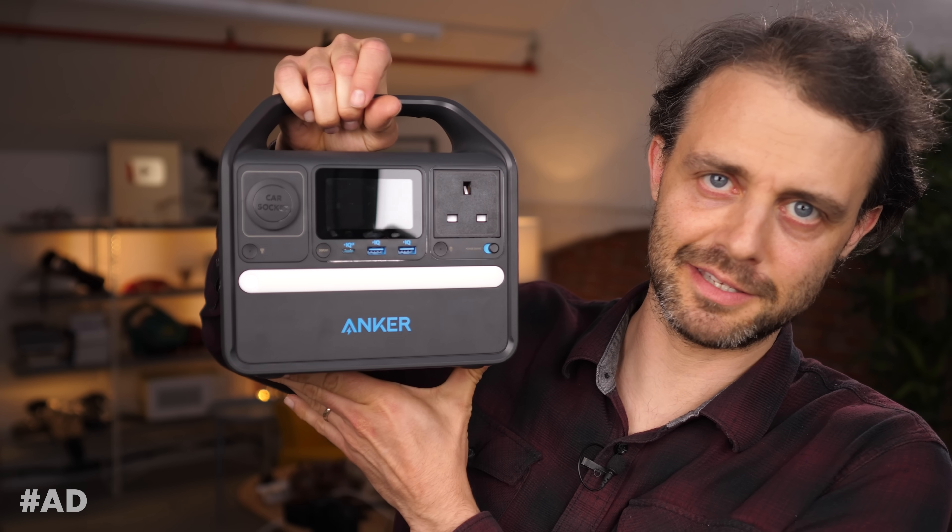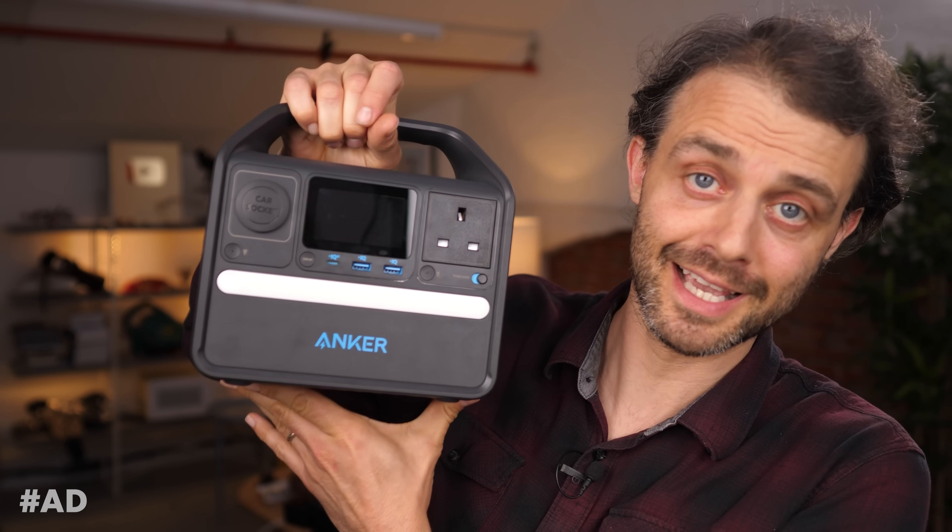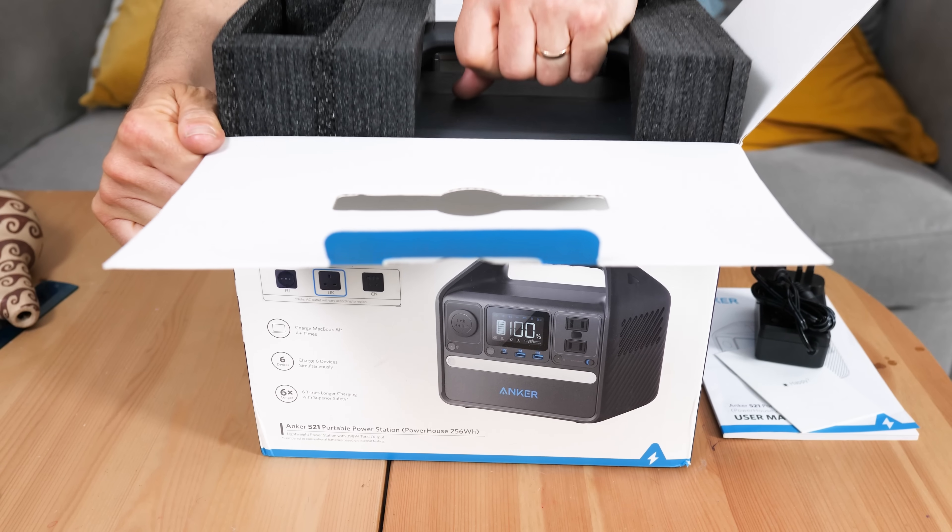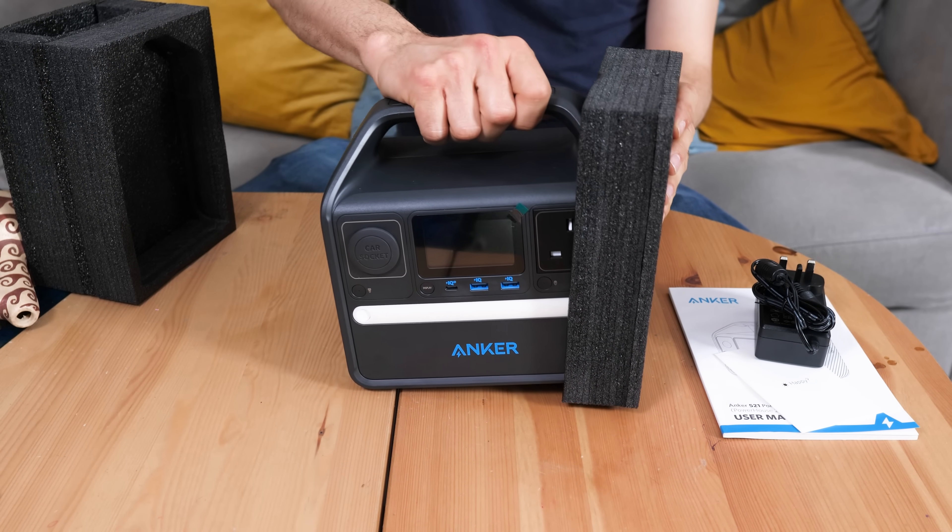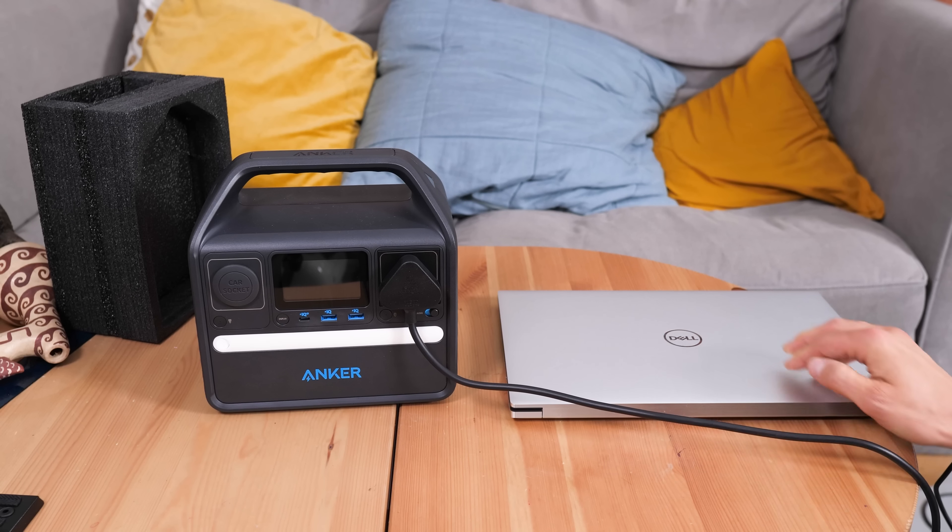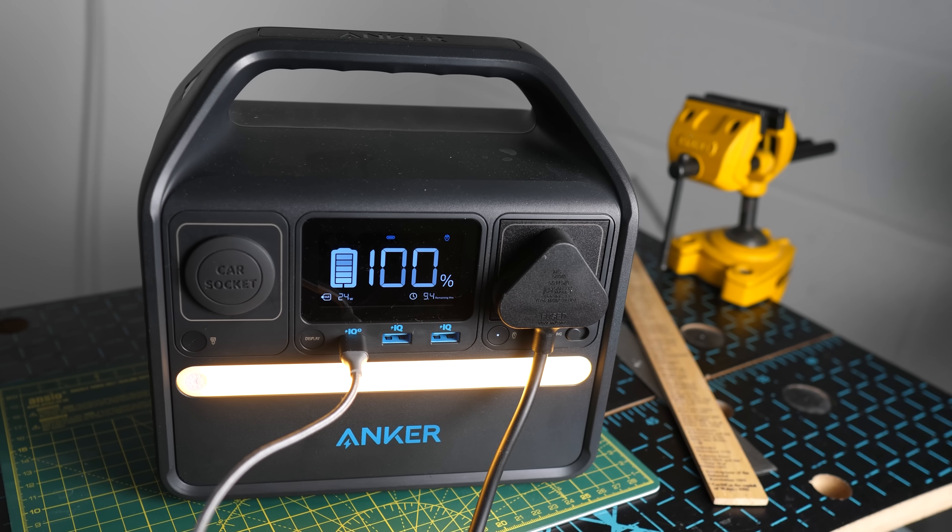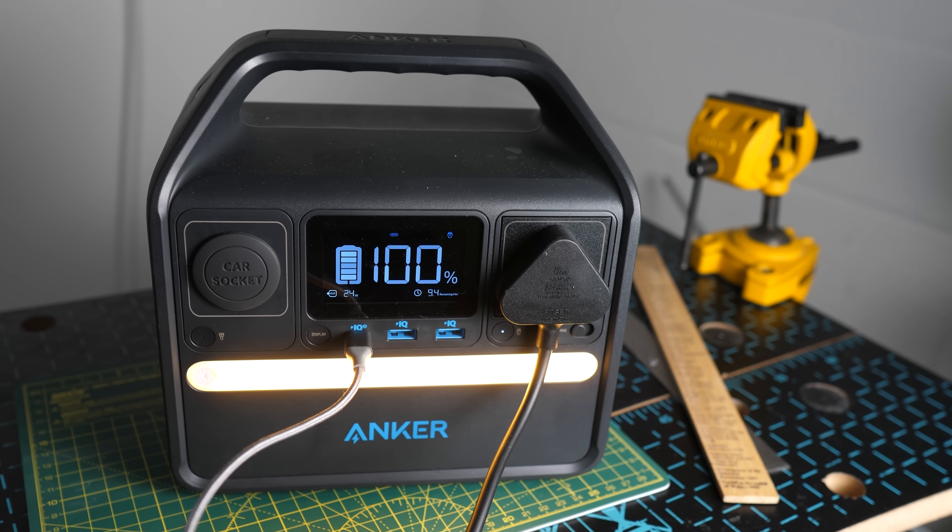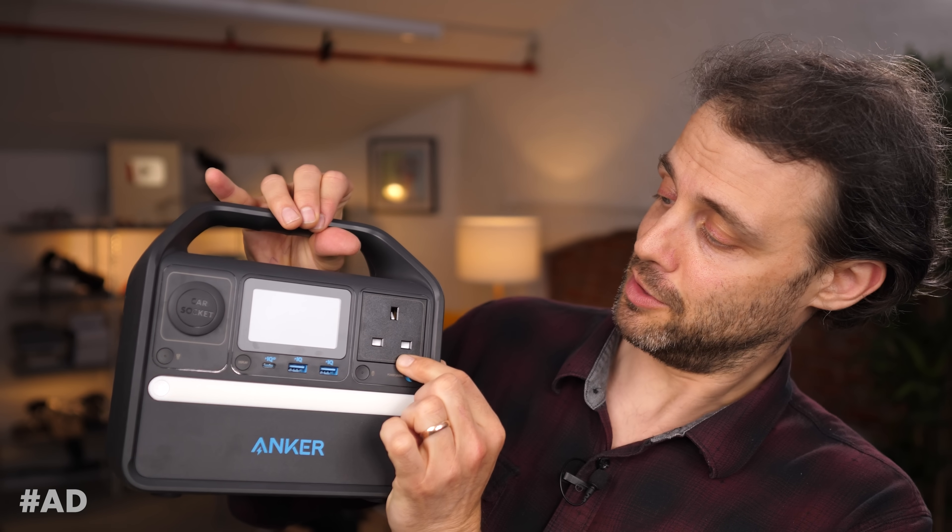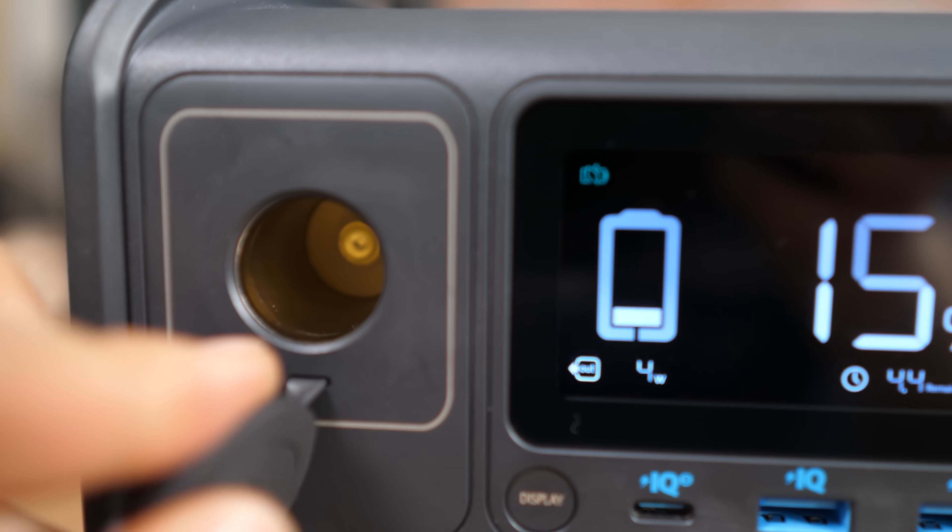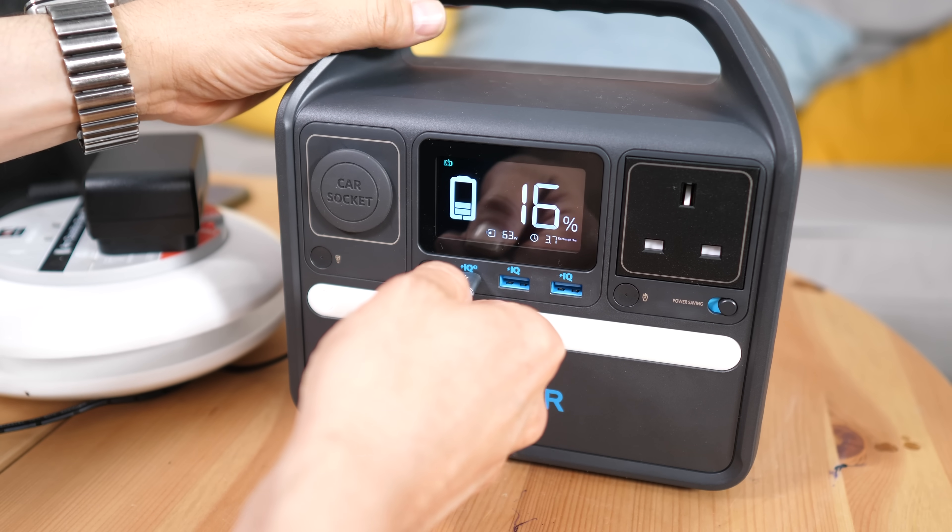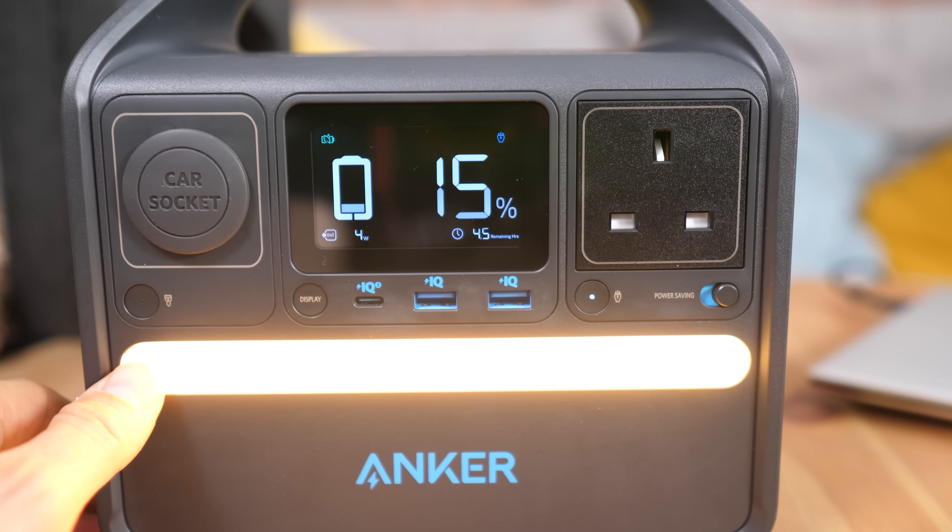Anker sent me this portable power station to do a quick review at the end of one of my videos. They are paying me—it's important that you know that—but let's just get into the details. It's the Anker 521 and it's got 256 watt hours of power, so it's an absolute beast. It'll give you 200 watts of power from the mains adapter. It's UK for me, but if you bought it in America obviously it'd be American. If you bought it in the EU, it would be EU. It also has the car charger that'll do 200 watts as well. It's got fast charging USB ports and it's got a fancy light as well.